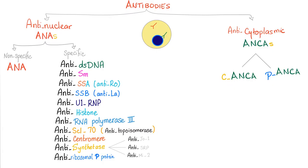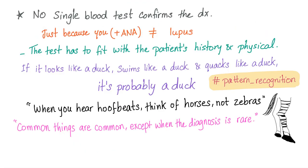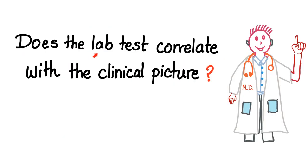And then we have the anti-ribosomal P protein. Please remember that there is no single blood test whatsoever capable of confirming the diagnosis. Just because your ANA is positive doesn't necessarily mean that you have lupus. The question is: does the lab test correlate with the clinical picture? That's why, for lupus, you need to see a clinician.